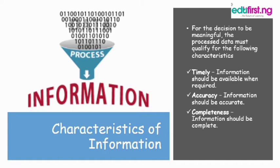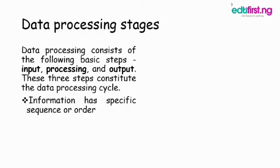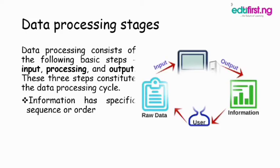Data processing stages: We have three data processing stages. The first stage is the input — that is the data. Then the processing. And lastly, the output — that is the information being produced.